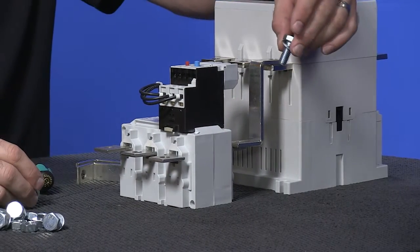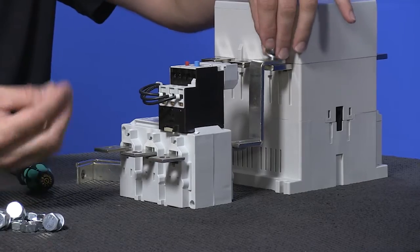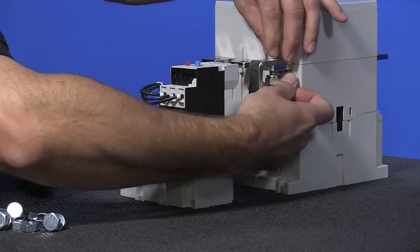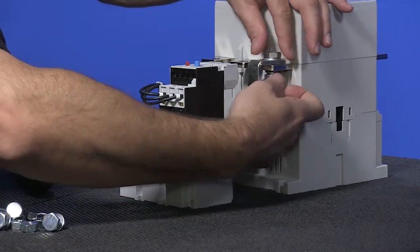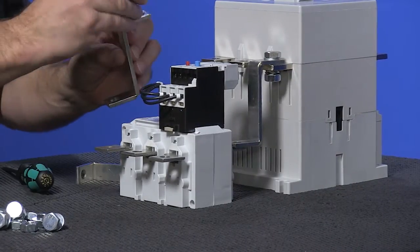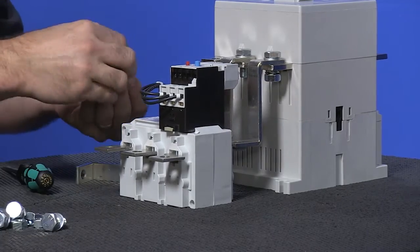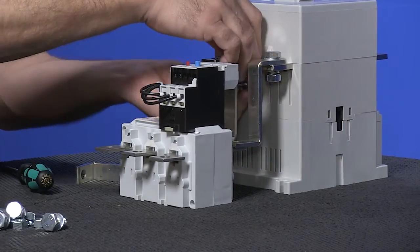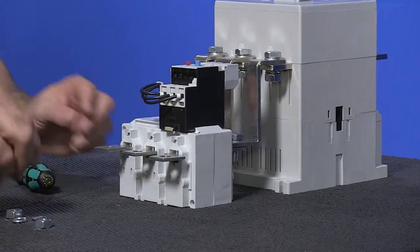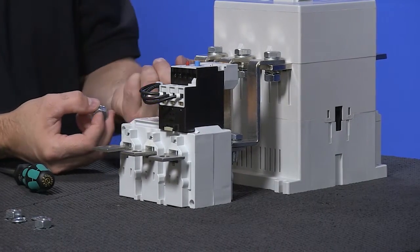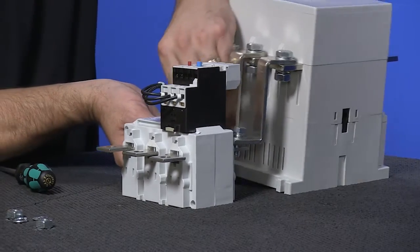So here we will install all of the bolts, washers, lock washers, and nuts to the contactor and the overload. Now if you notice, we are using a bolt, flat washer, and on the bottom side we are using a lock washer and the nut.